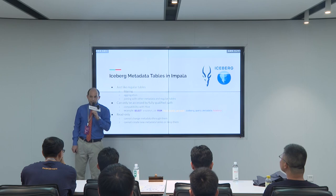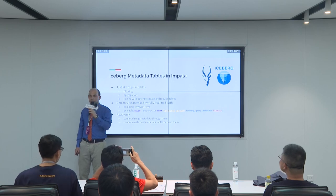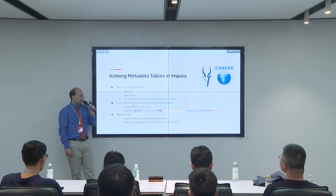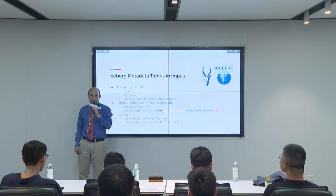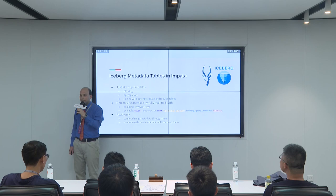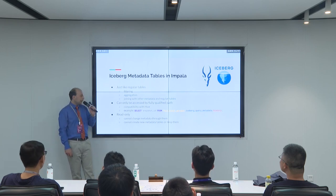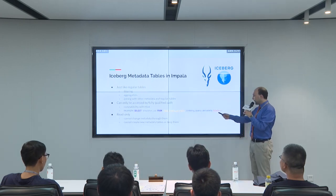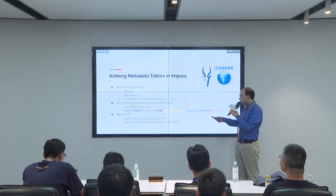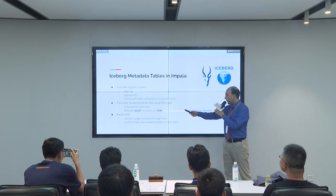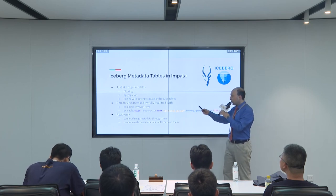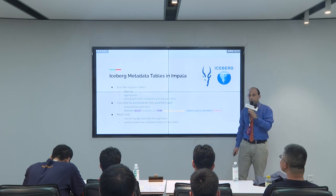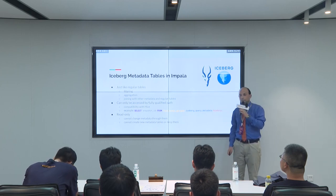Iceberg metadata tables in Impala can be used very much like regular tables — you can query them, filter them, and join them with other metadata tables or regular tables. One difference is that they always have to be accessed with fully qualified paths, which we've taken from Hive for compatibility. The metadata table name is, for example, 'history', belonging to the regular table 'iceberg_query_metadata' in the 'functional_parquet' database. Metadata tables are always read-only in Impala — you can't change metadata through them, create new ones, or drop existing tables.